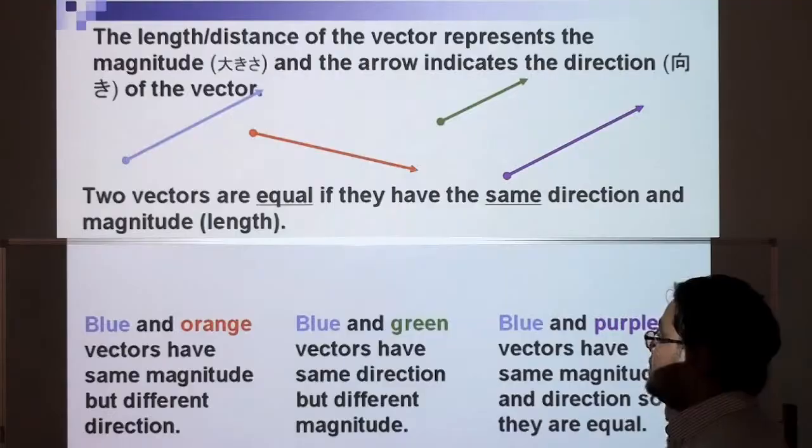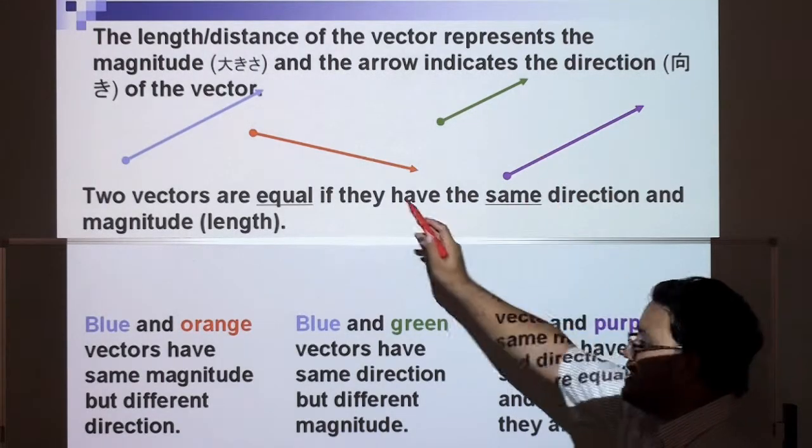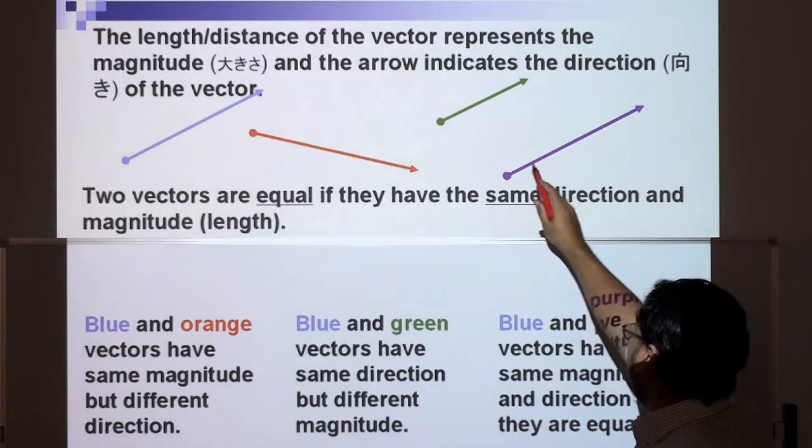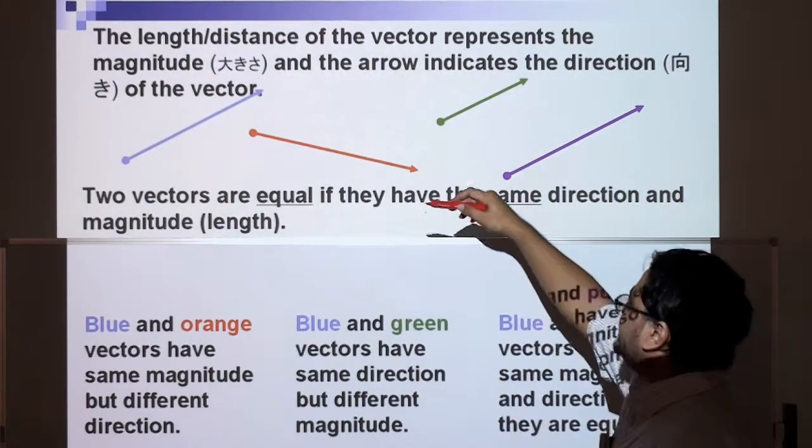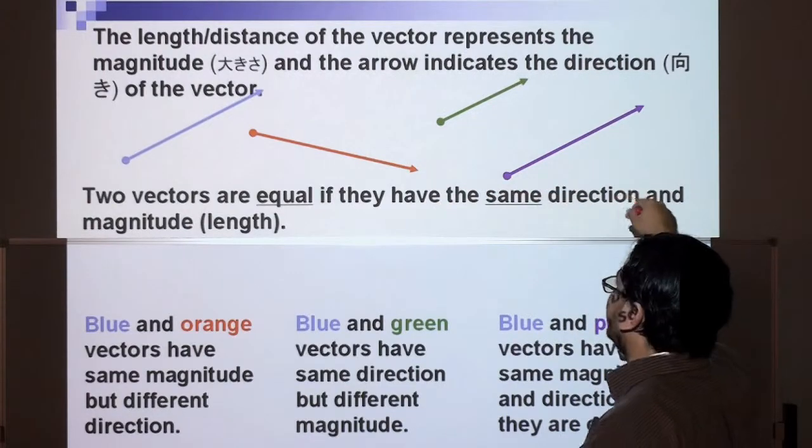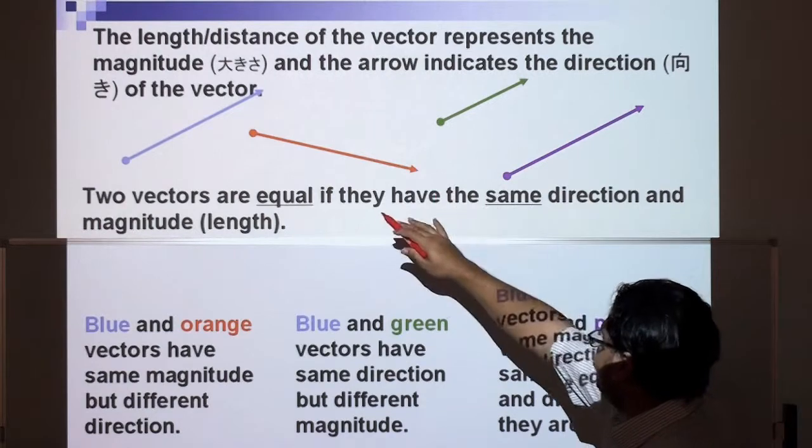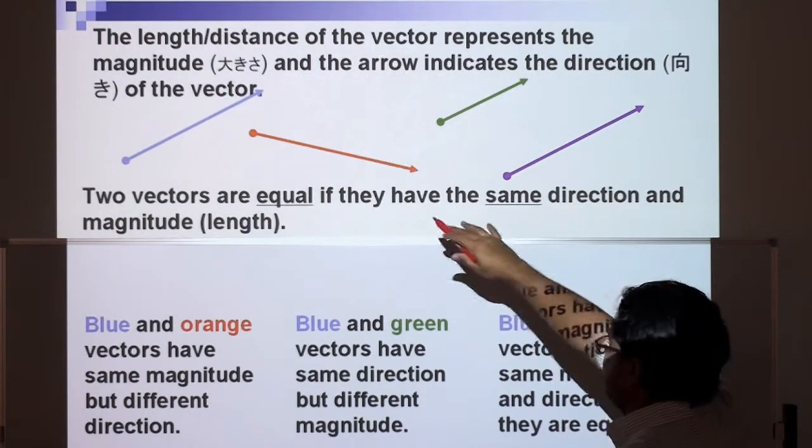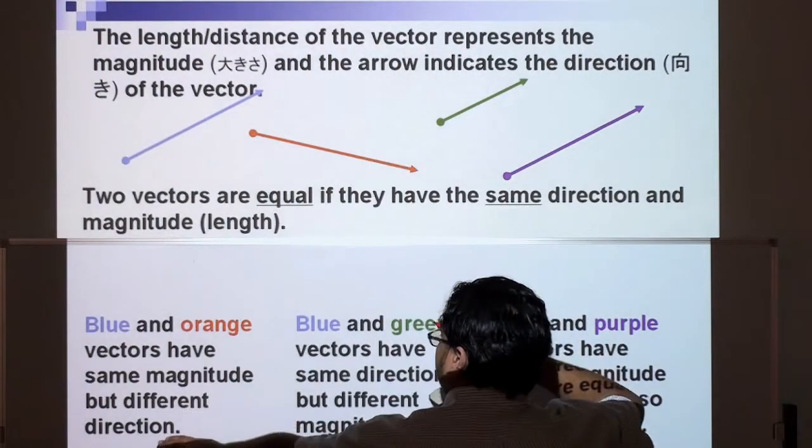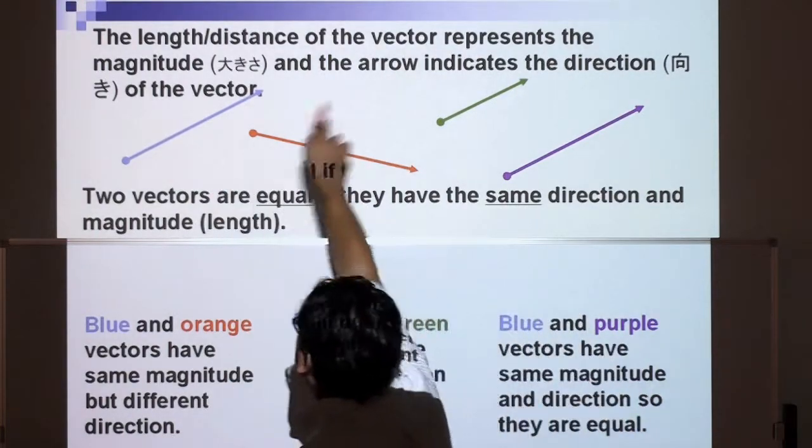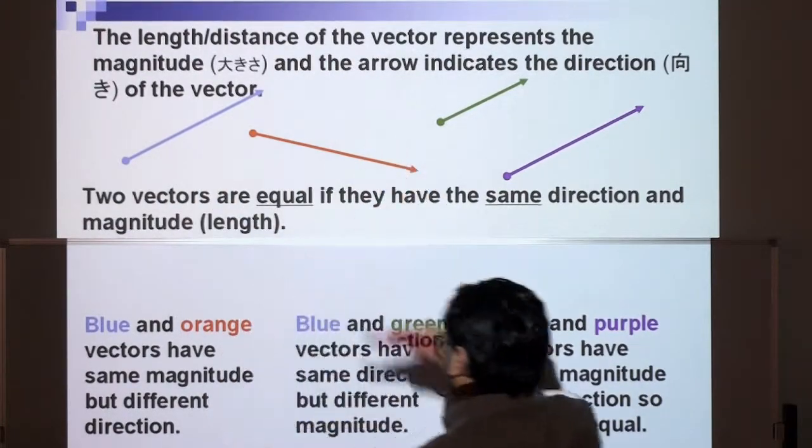Let's move on. The length or distance of the vector represents the magnitude, and the arrow indicates the direction of the vector. Now two vectors are equal if they have the same direction and the same magnitude. Now look at these four vectors right here. Blue and orange vectors have the same magnitude but different direction. That one's pointing that way, that's pointing down, but the length of the arrows are the same.